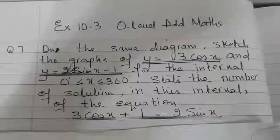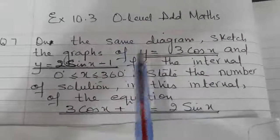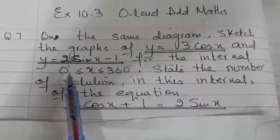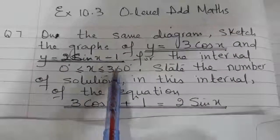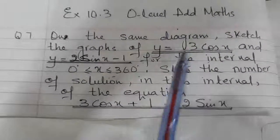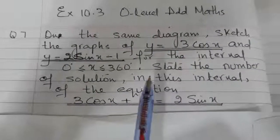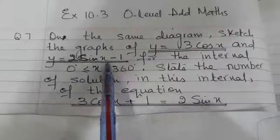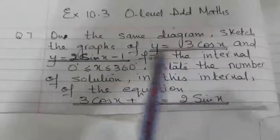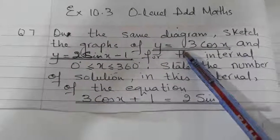Now let's see question number 7 of exercise 10.3. Here again we have to sketch on the same diagram two curves: 3cos x and 2sin x minus 1. The interval is again 0 to 360 degrees. After that we have to see the number of solutions in the interval for this equation. This looks a little different from what we sketched before, so let's sketch it first and then we will see — the question says to state the number of solutions using this graph.